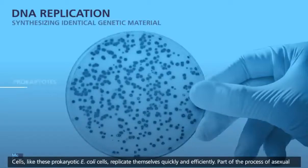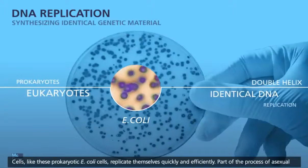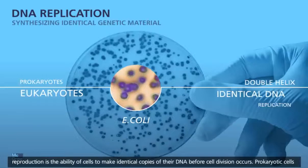Cells, like these prokaryotic E. coli cells, replicate themselves quickly and efficiently. Part of the process of asexual reproduction is the ability of cells to make identical copies of their DNA before cell division occurs.